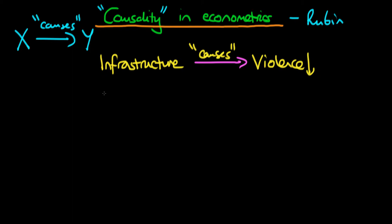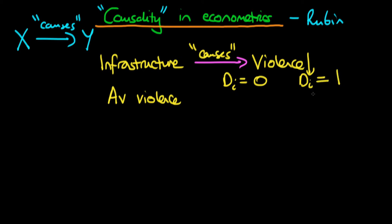You might naively think: let's just compare the average level of violence in those states which didn't receive infrastructure spending — I'll say D equals zero for those states — and contrast that with those states which did receive infrastructure spending, where D_i equals one. We might find that on some violence index, the average level for states that didn't receive infrastructure spending was 100, whereas for those that did, it was 150.